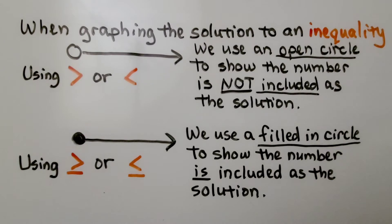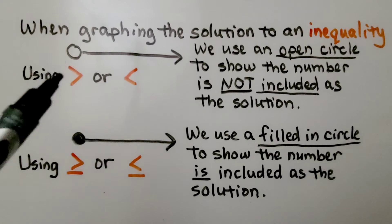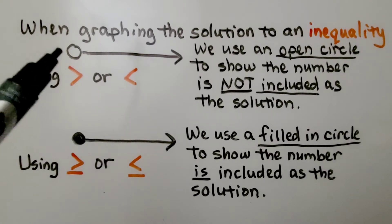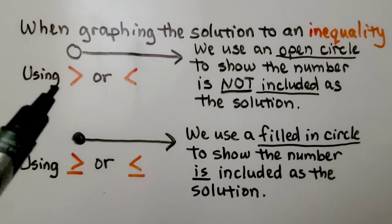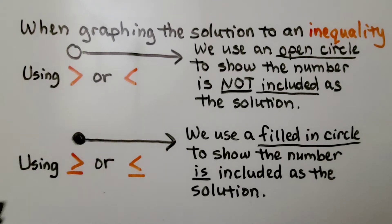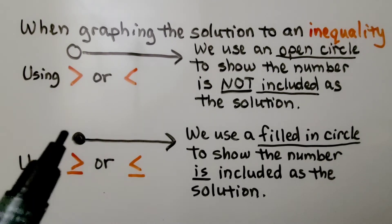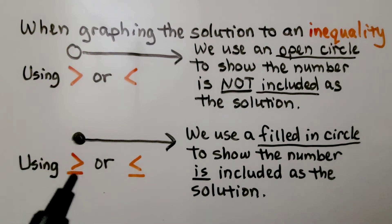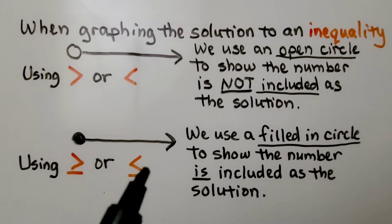When graphing the solution to an inequality, we use an open circle to show the number is not included as the solution, and we'll be using a greater than or less than symbol. We use a filled-in circle to show the number is included as the solution, and that would be a greater than or equal to, or less than or equal to.